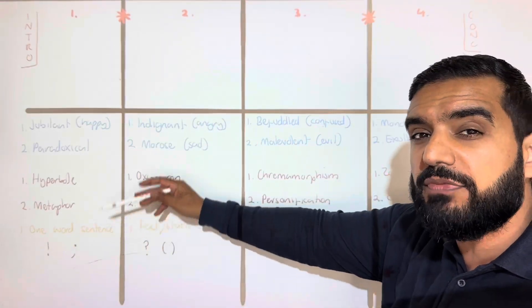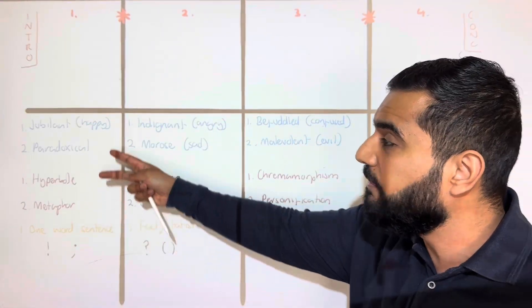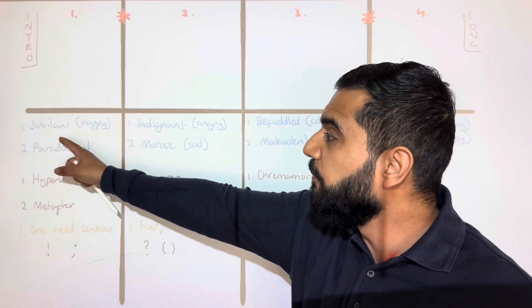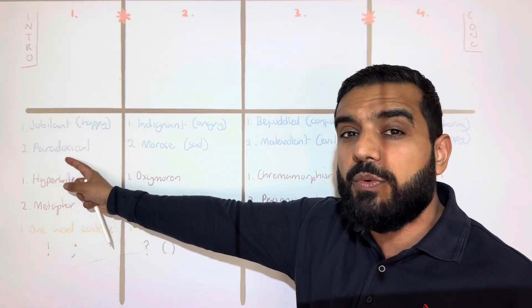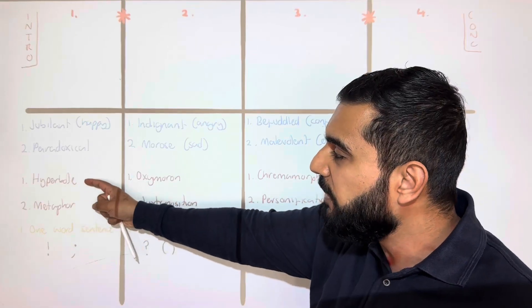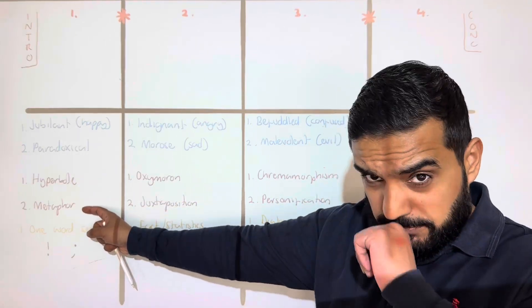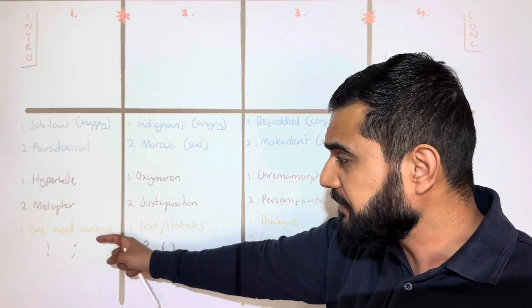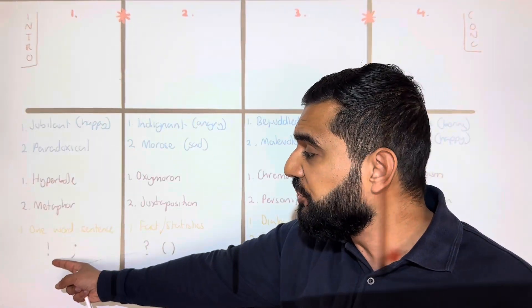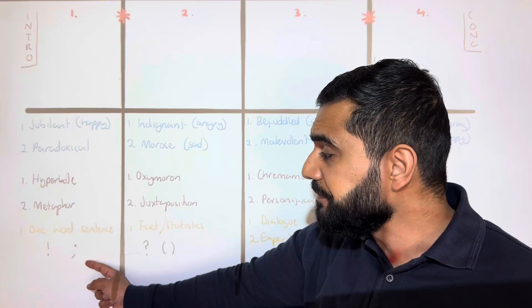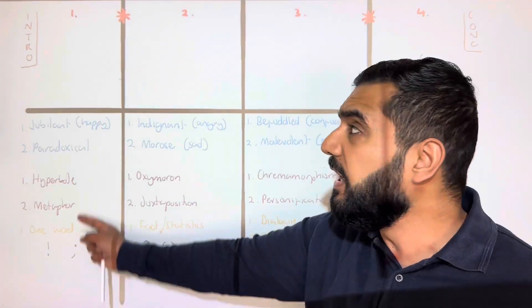Then we do our first main paragraph. As a minimum, we need to have two big words: for happy, use the word jubilant; for strange, use the word paradoxical. Then have a hyperbole and a metaphor for your language devices. For structure, have a one-word sentence. For punctuation, we're going to have exclamation mark and semicolon.